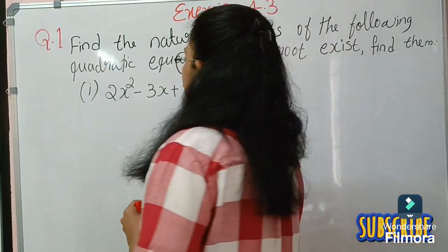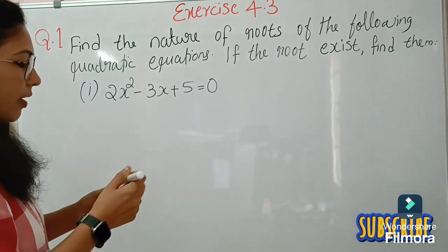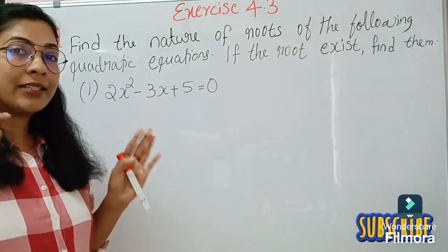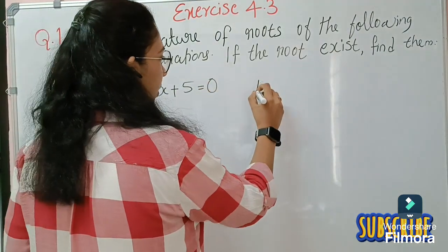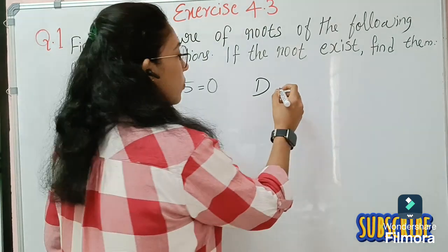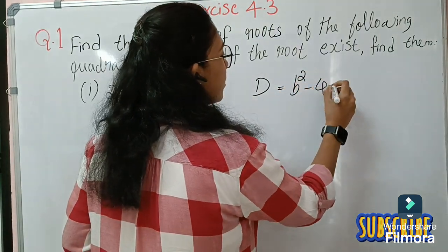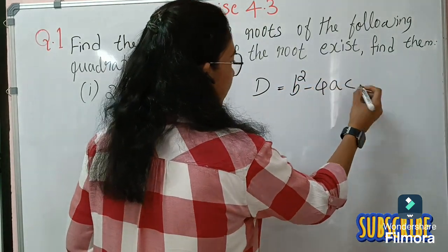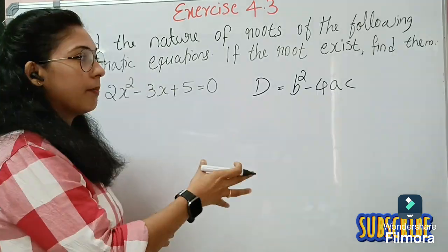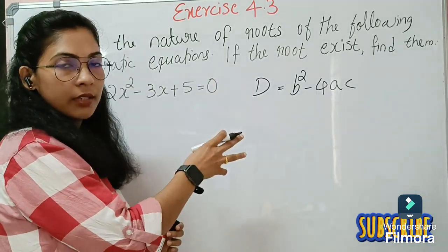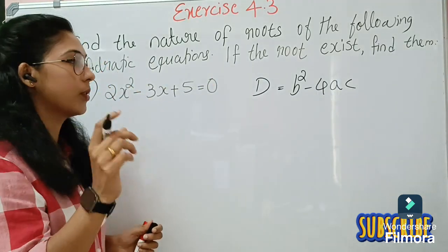To find the nature of roots we have to find out the discriminant D. The discriminant D is equal to B² minus 4ac. Based on this discriminant we determine the nature of roots.